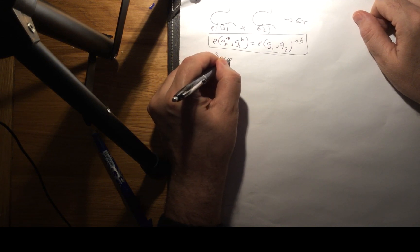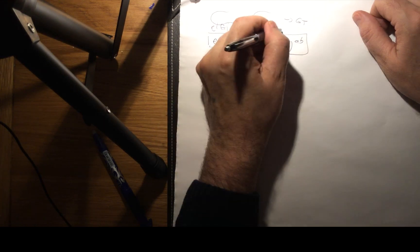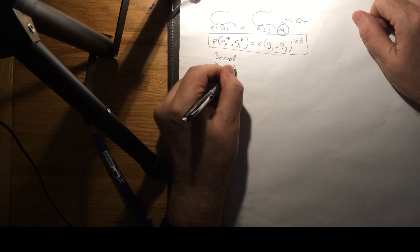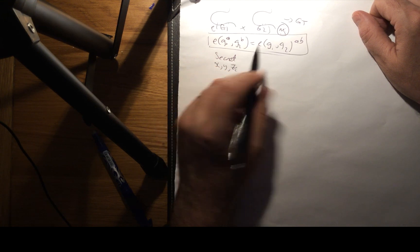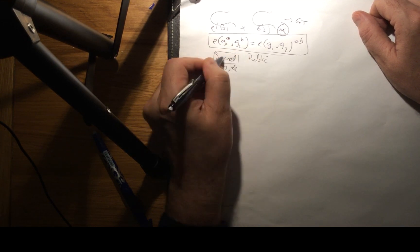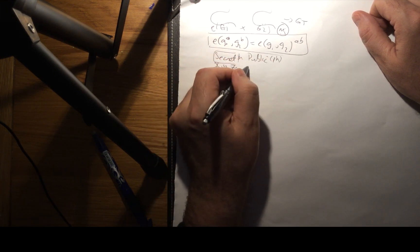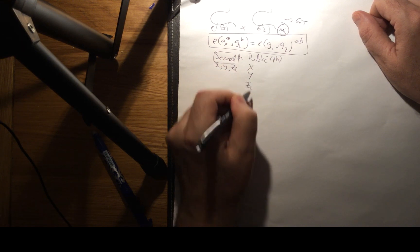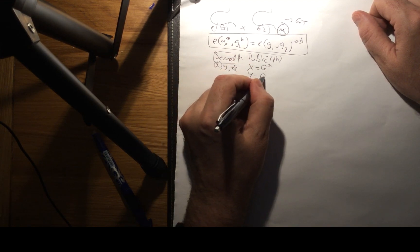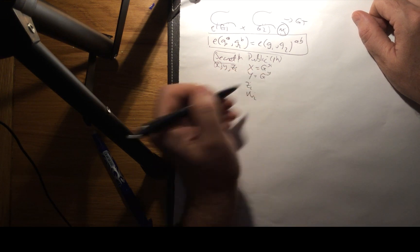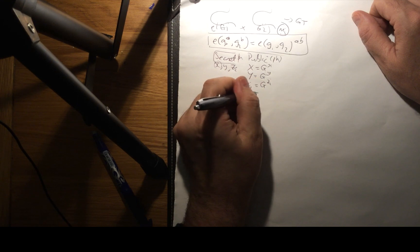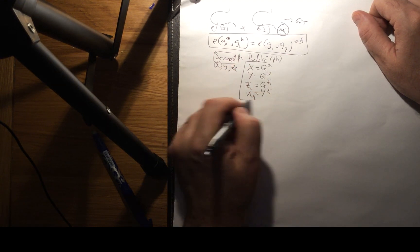Starting with our secret key: x, y, and then for s messages mi we have zi where i runs up to the number of messages. That's our secret key. We then have a public key (sk → pk) consisting of x-hat, y-hat, zi-hat, and wi. x-hat equals g to the power of x, y-hat equals g to the power of y (a point on the elliptic curve for the pairing), zi-hat equals g to the power of zi, and wi equals y-hat to the power of zi. This becomes our public key.